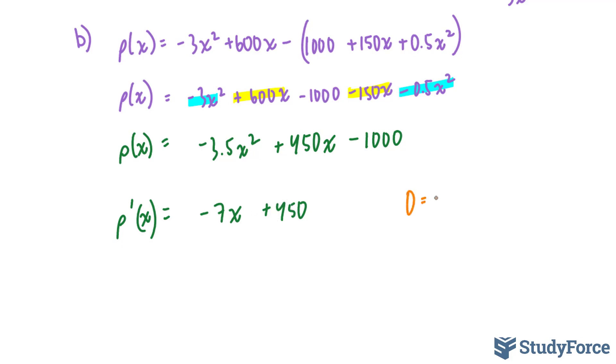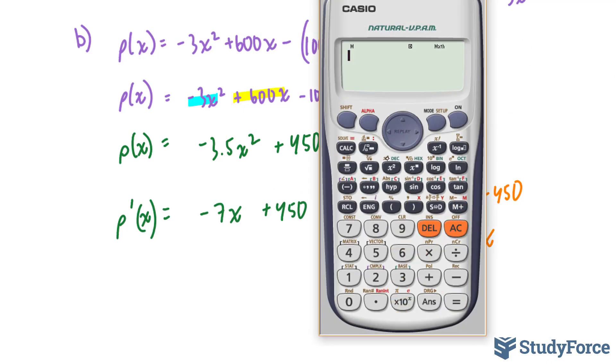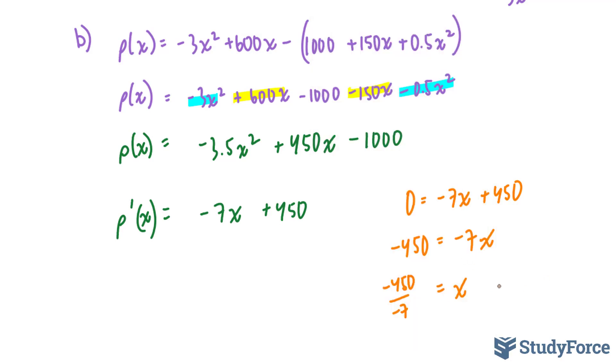Next, I'll set this equal to 0. 0 is equal to -7x plus 450. We need to solve for this x, so I'm going to bring this over. And therefore, x is equal to -450 divided by -7. Using our calculator, -450 divided by -7 gives us a positive number of approximately 64.28. 64.28 is equal to x.